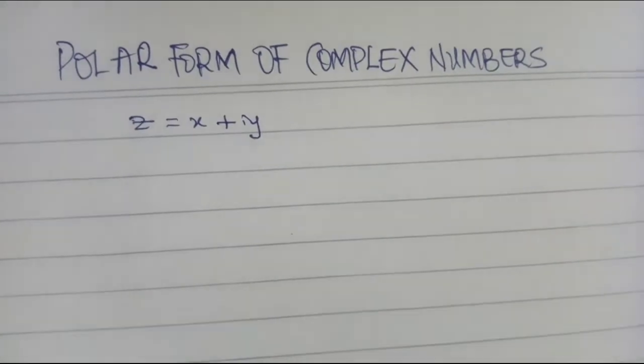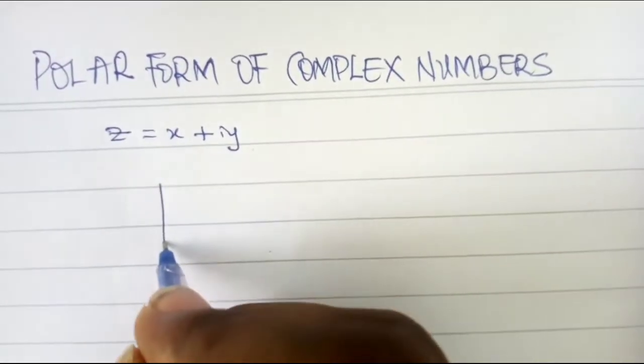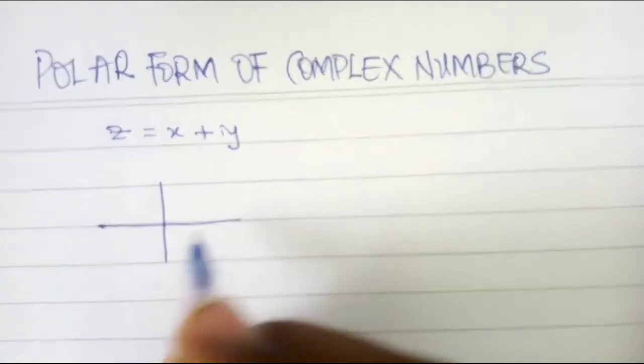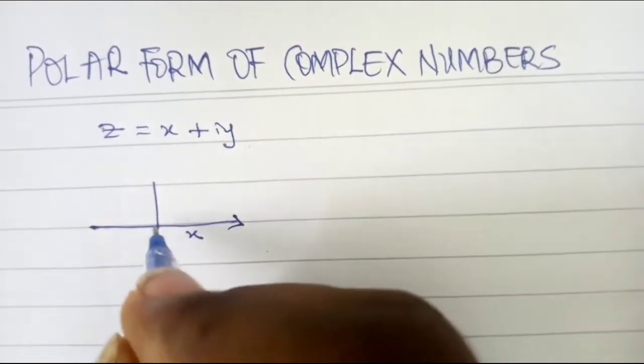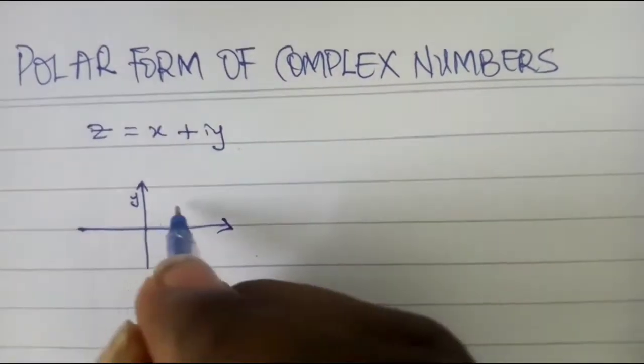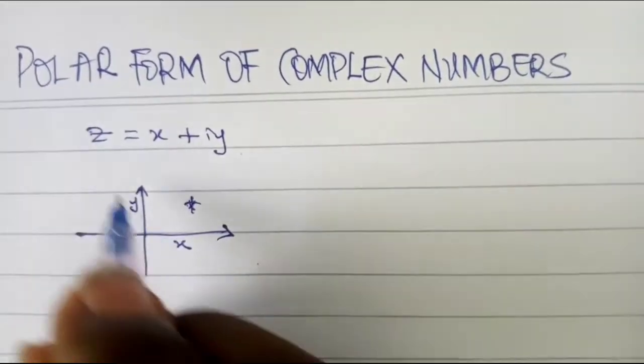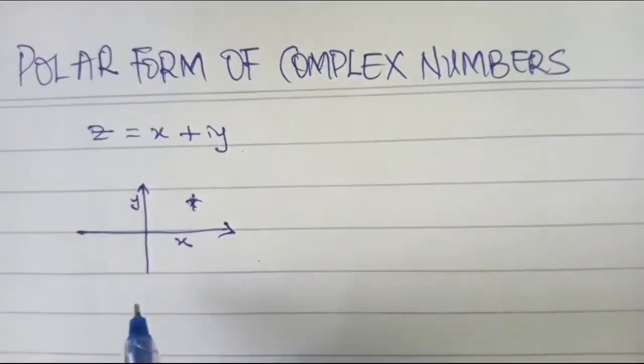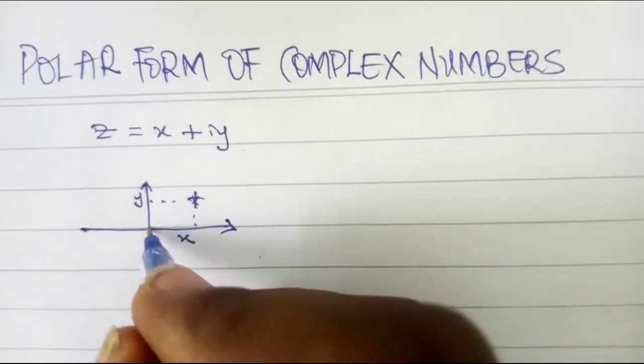We're representing this on an argand diagram, we've done that before. We have the real part which is x on the x axis and the imaginary part which is y on the y axis. Suppose we have a point z, this complex number represented on the argand diagram, and so we trace our y and x to it.